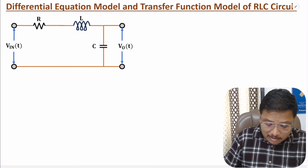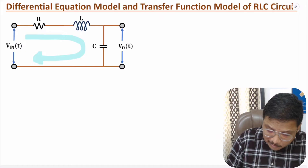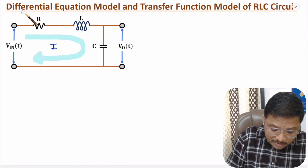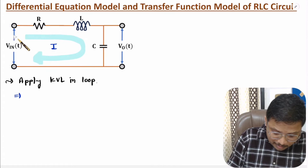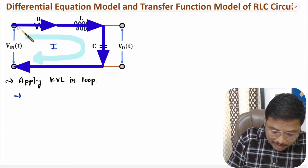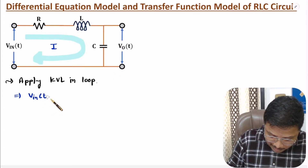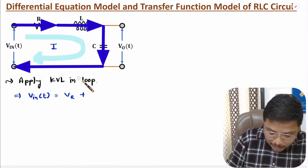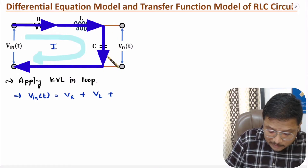To derive the differential equation model, let us consider one closed loop. We have a closed loop and we assume current is I. To derive the differential equation, I will apply KVL in this loop. Applying KVL, the input voltage is distributed across R, L, and C. So one can say V_in(t) equals voltage across resistance V_R, plus voltage across inductance V_L, plus voltage across capacitance.